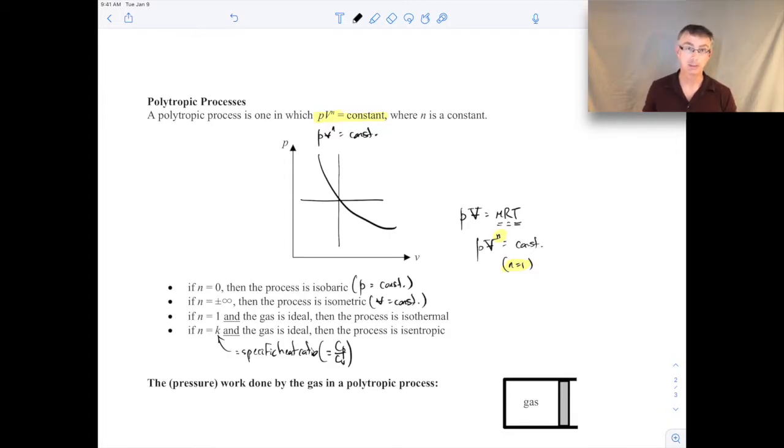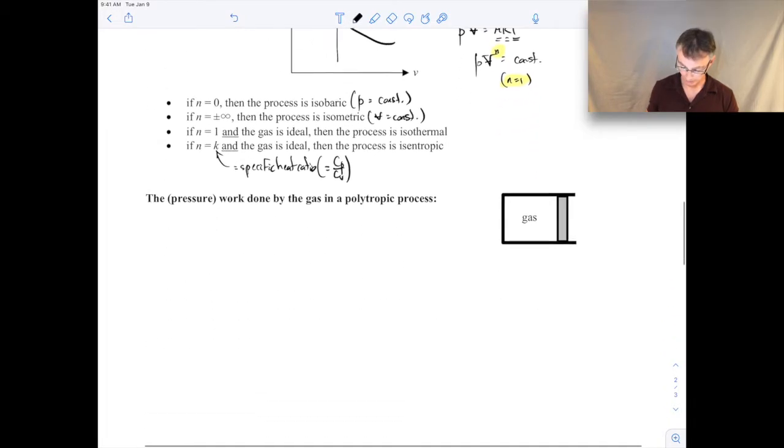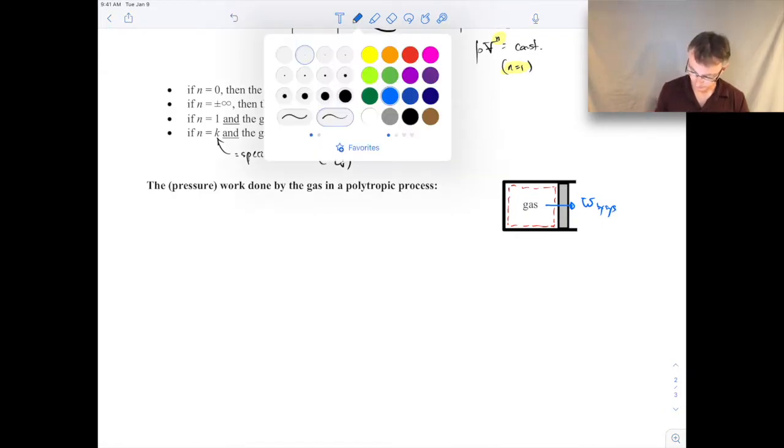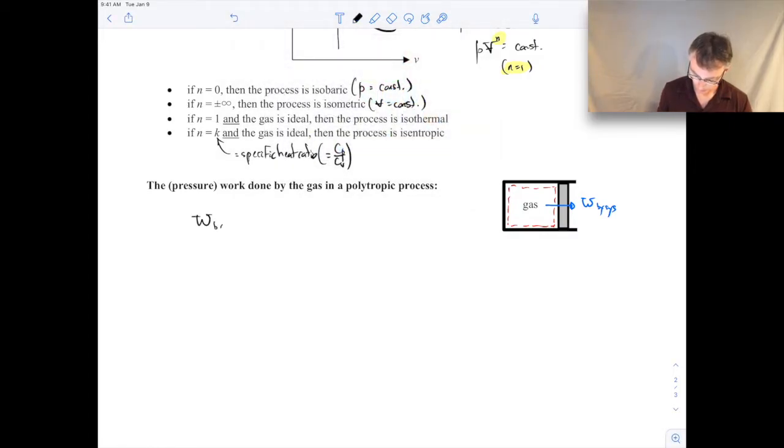So a lot of times we're interested in the amount of pressure work done during a process. So the amount of pressure work done by a gas in a polytropic process we can determine. So what I'm talking about here is like gas in a piston, like in the picture shown on the right. The gas would be our system. And we're interested in knowing the amount of work done by the system on the surroundings in that case. So the way we can calculate that is it's typical PDV type of work.